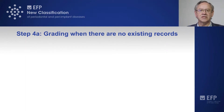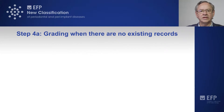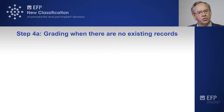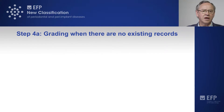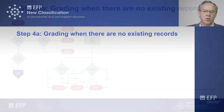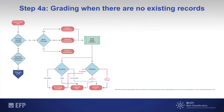Once we have clearly established the staging of the periodontitis case, then we should move to grading the patient. To grade the patient appropriately, we basically have two ways: whether we have existing records or whether we do not have existing records at our disposal. If we don't have existing records, let's move to step 4A.